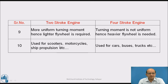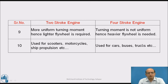Regarding applications, the two-stroke engine is mainly used for two-wheelers such as scooters and motorcycles, while cars, buses, and other four-wheelers are mainly provided with four-stroke engines. In ship propulsion, two-stroke engines are also used because high power heavy engines are needed there.